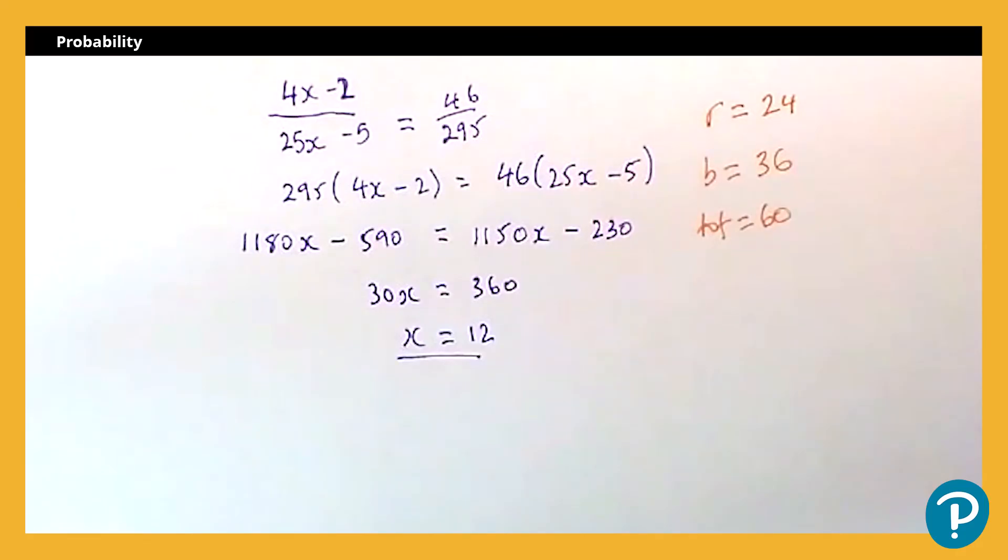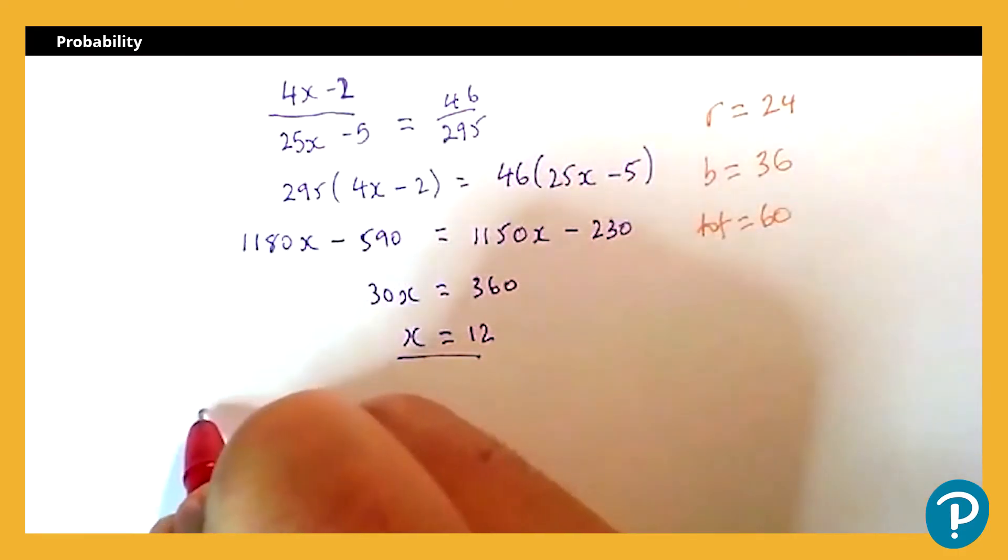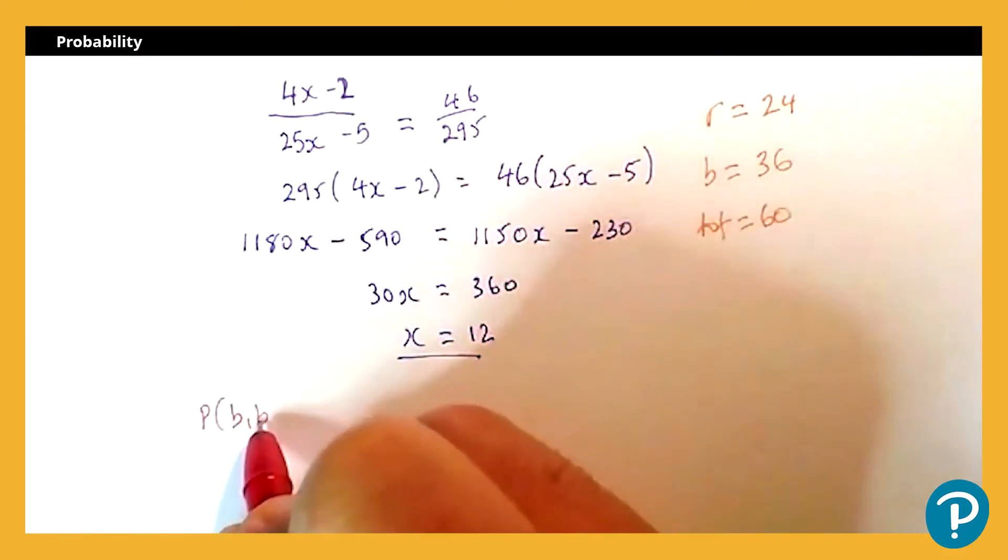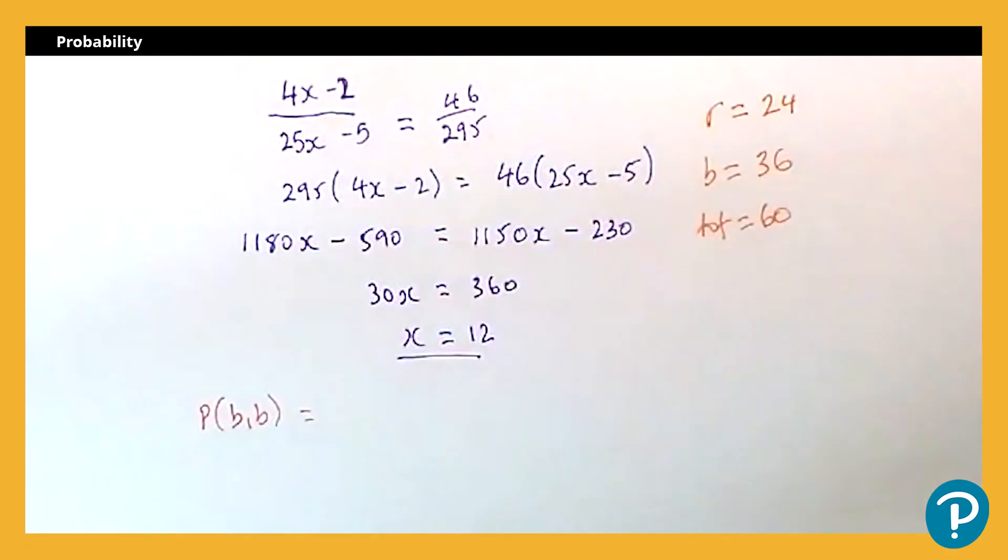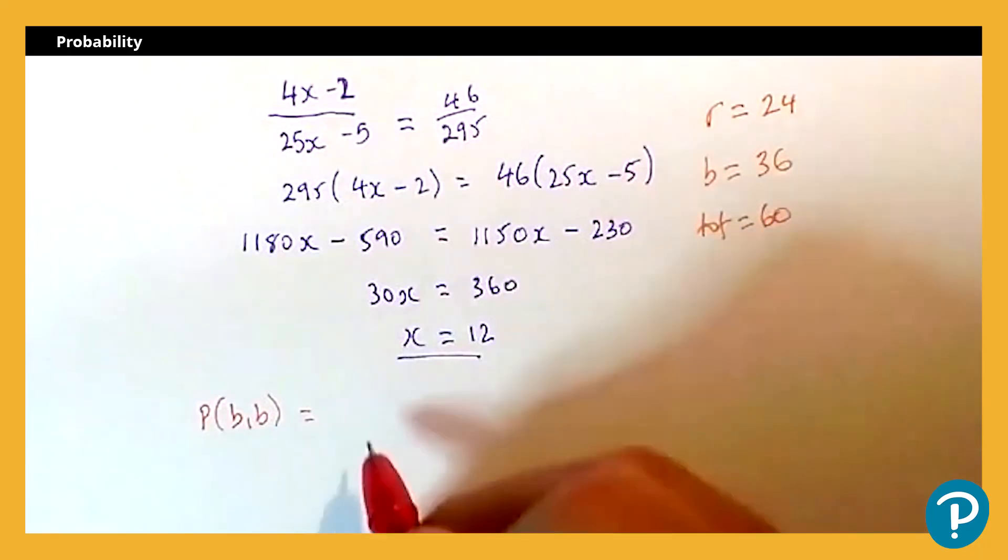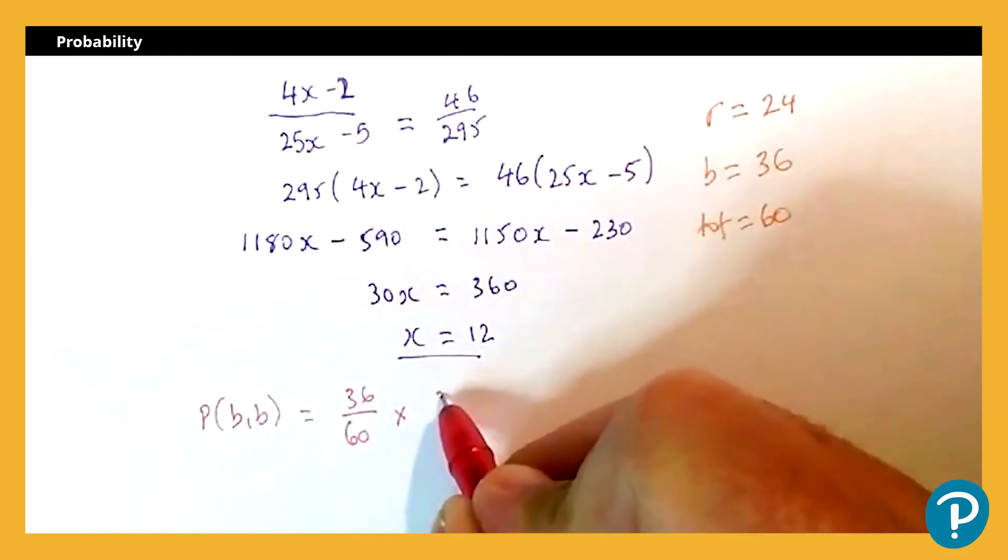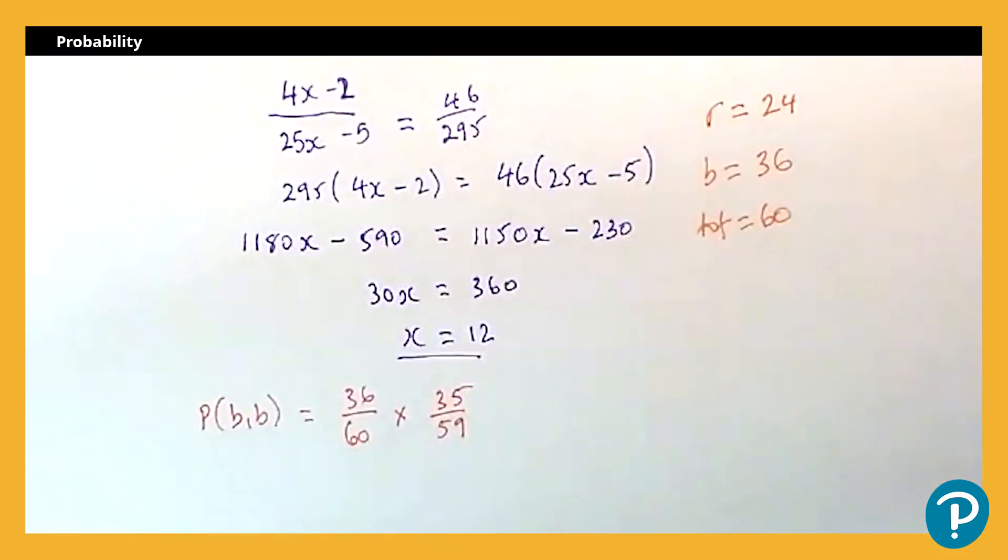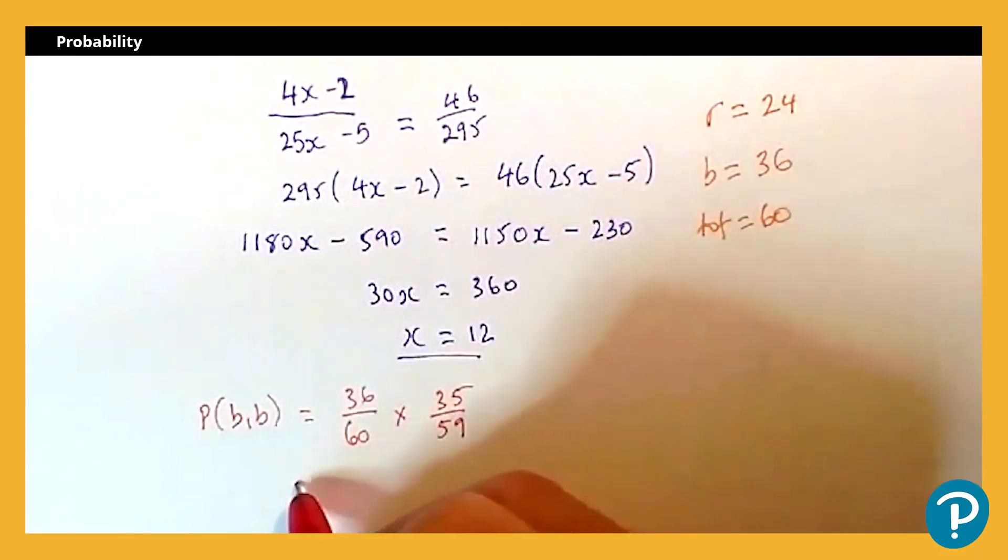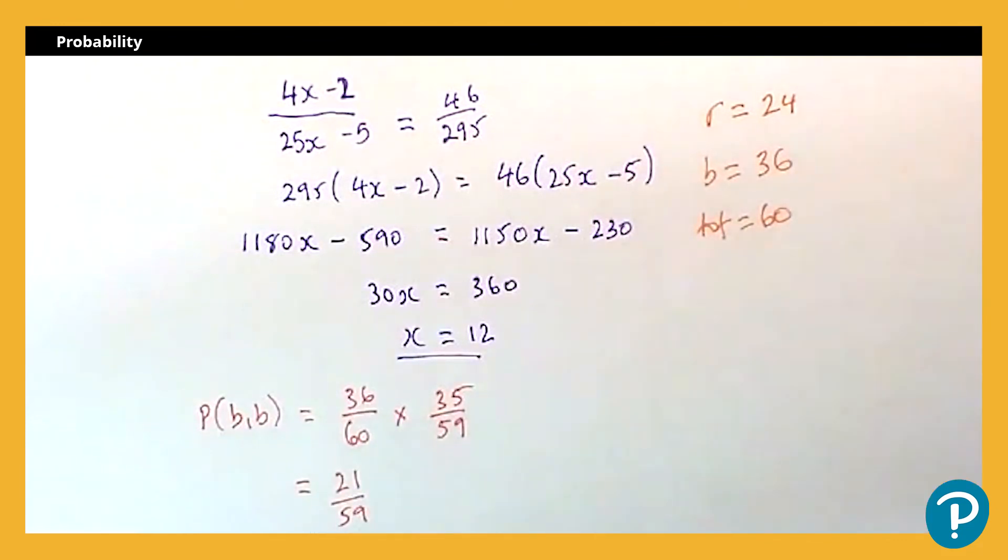The last step then is to actually calculate the probability the question has asked for. So the question has asked for the probability of blue and blue. So I know the probability of getting blue first time around is 36 out of 60, and then on the second choice that would be 35 out of 59. This is one less blue and one less in total. Pop that in your calculator, 21 over 59.